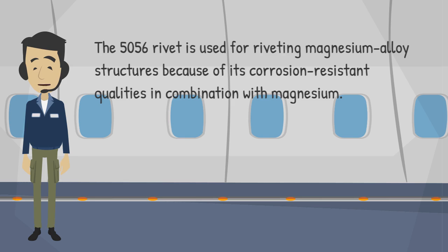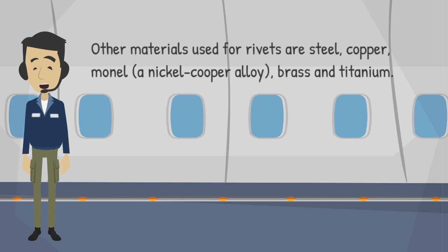The 5056 rivet is used for riveting magnesium alloy structures because of its corrosion-resistant qualities in combination with magnesium. Other materials used for rivets are steel, copper, monel (a nickel-copper alloy), brass, and titanium.